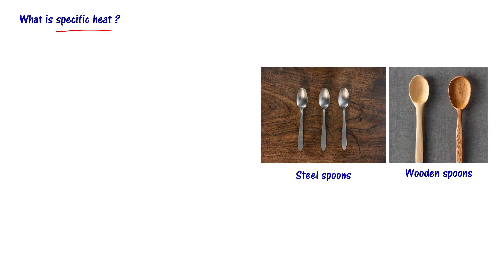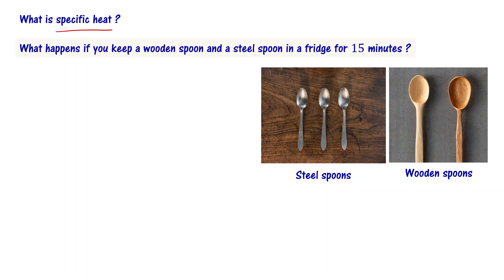What is specific heat? Let us consider a few examples. My kitchen has steel spoons and wooden spoons. What happens if you keep a wooden spoon and a steel spoon in the fridge for 15 minutes?